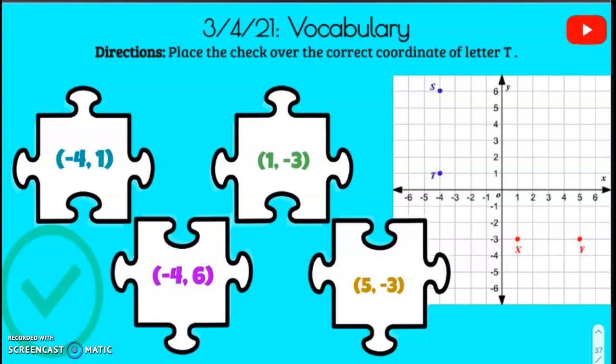For this vocabulary activity, we're going to place the check over the correct coordinate for letter T. So letter T — where's letter T? Here's T over here.